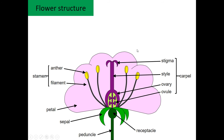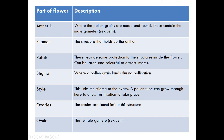In the lesson you all labeled this sheet, so you've got the stigma, the style, the ovary, and the ovule — all the female reproductive system — and together that's known as a carpel. The anther is where the pollen is made, held up by the filament, and that is the stamen. Make sure this sheet is completed in your book.